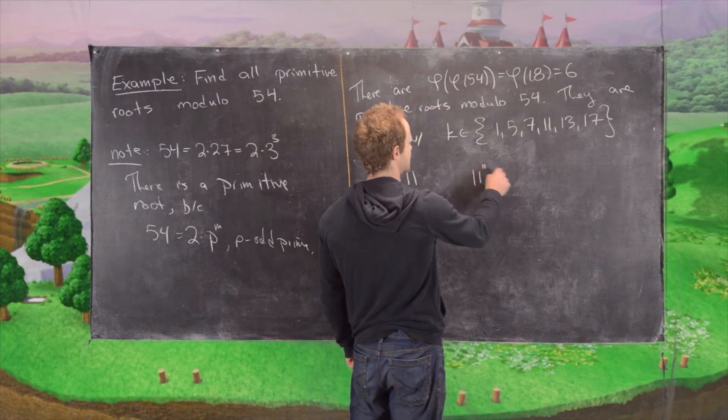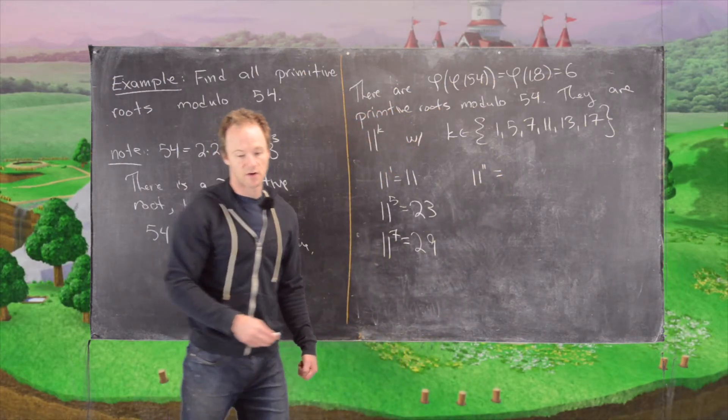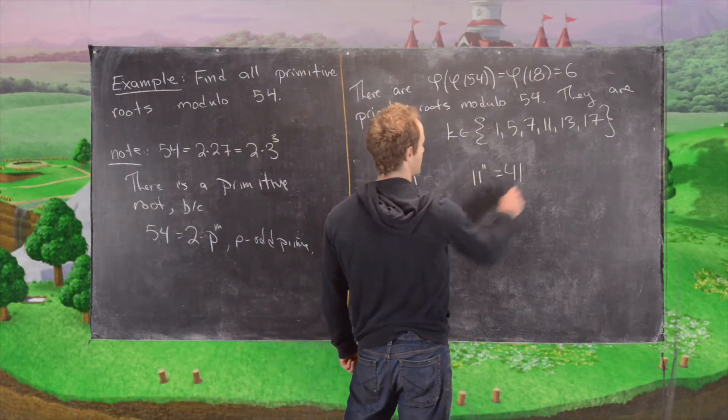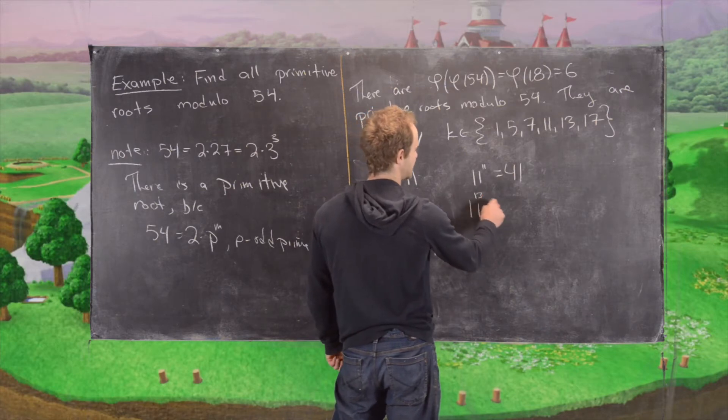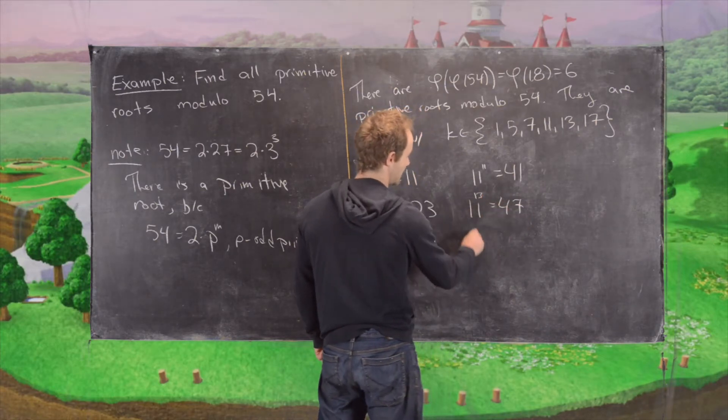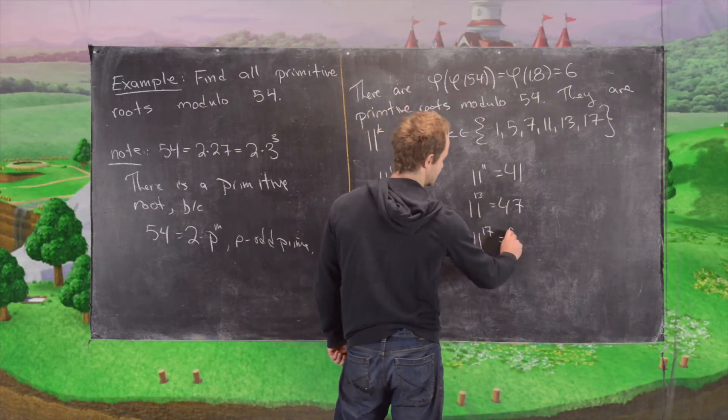11 to the 11 is 41. 11 to the 13 is 47. And then 11 to the 17 is 5.